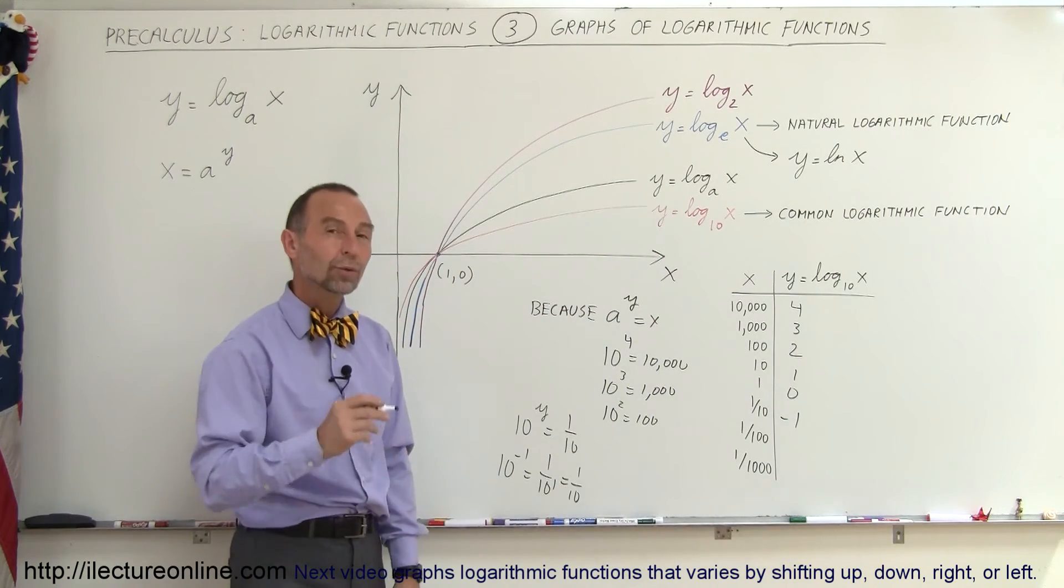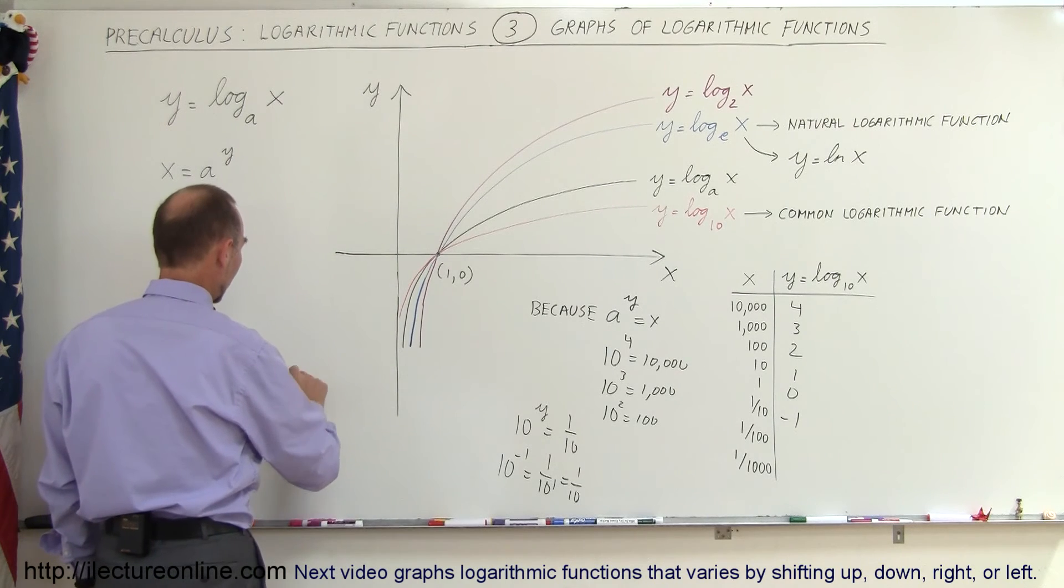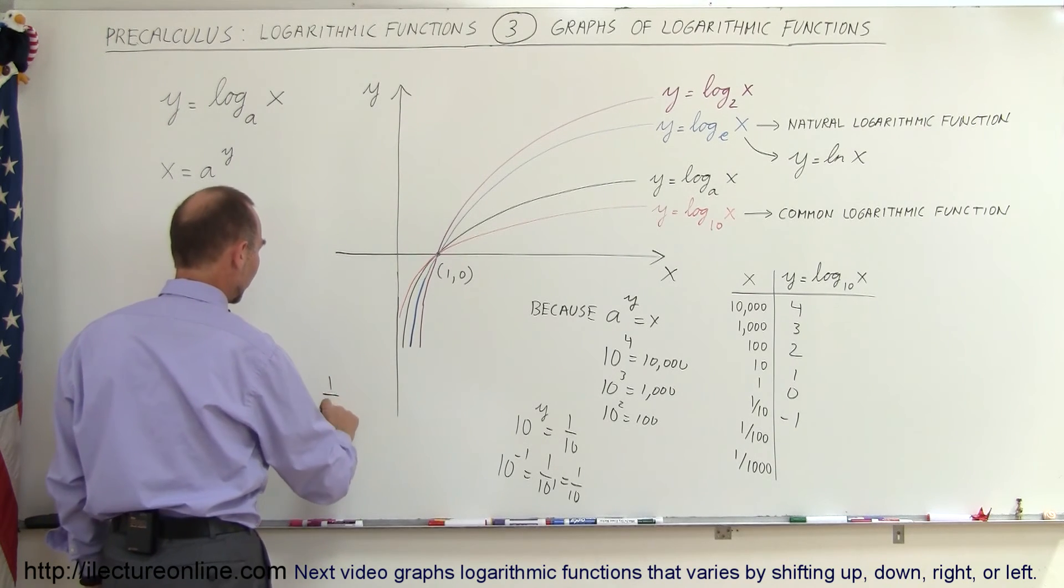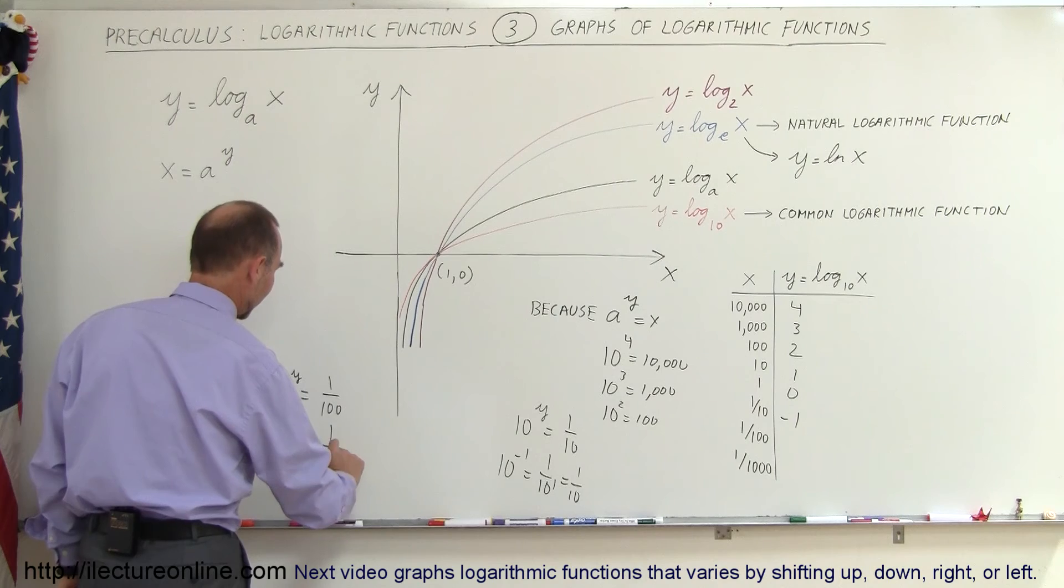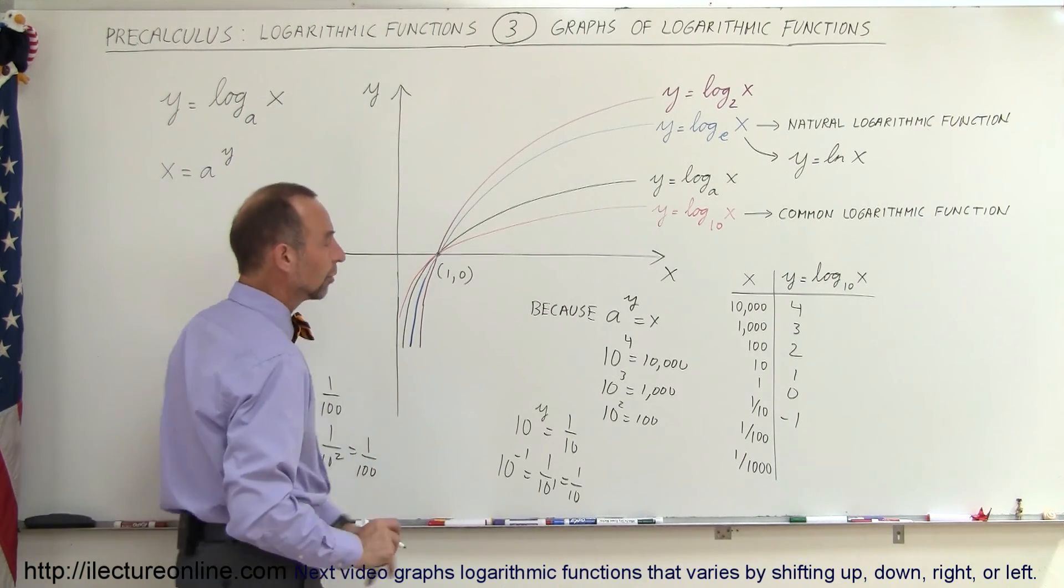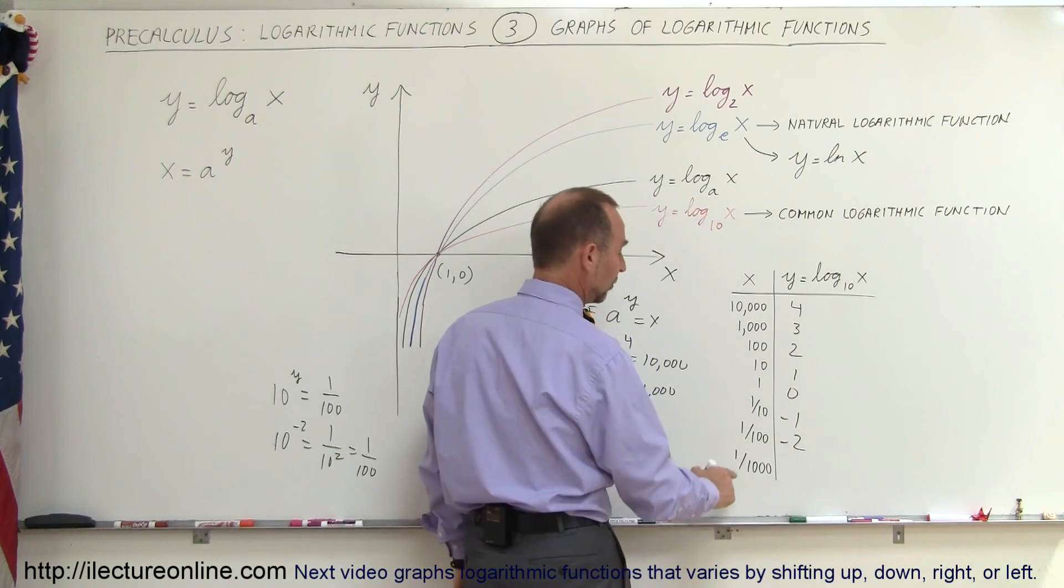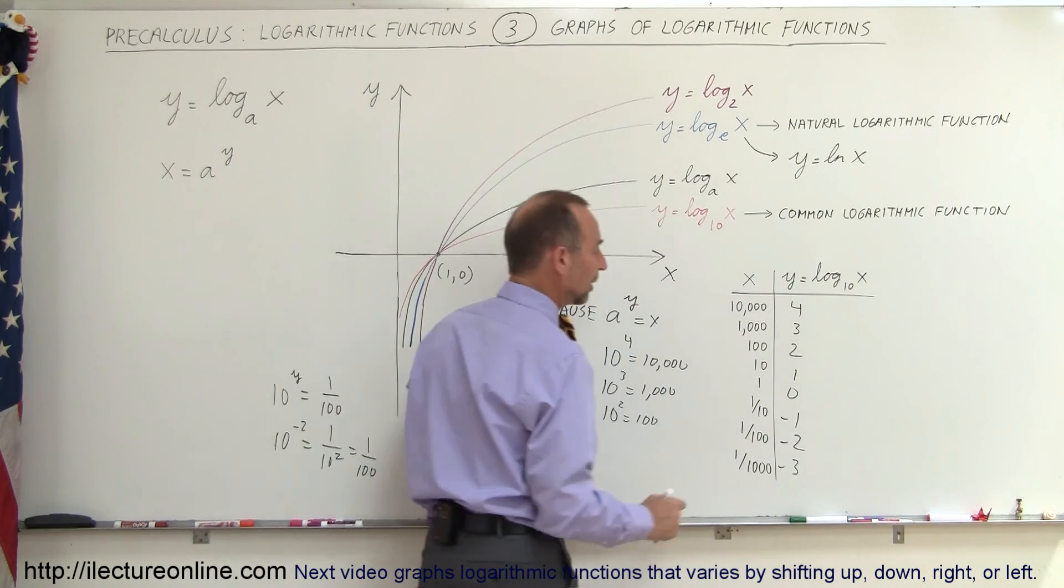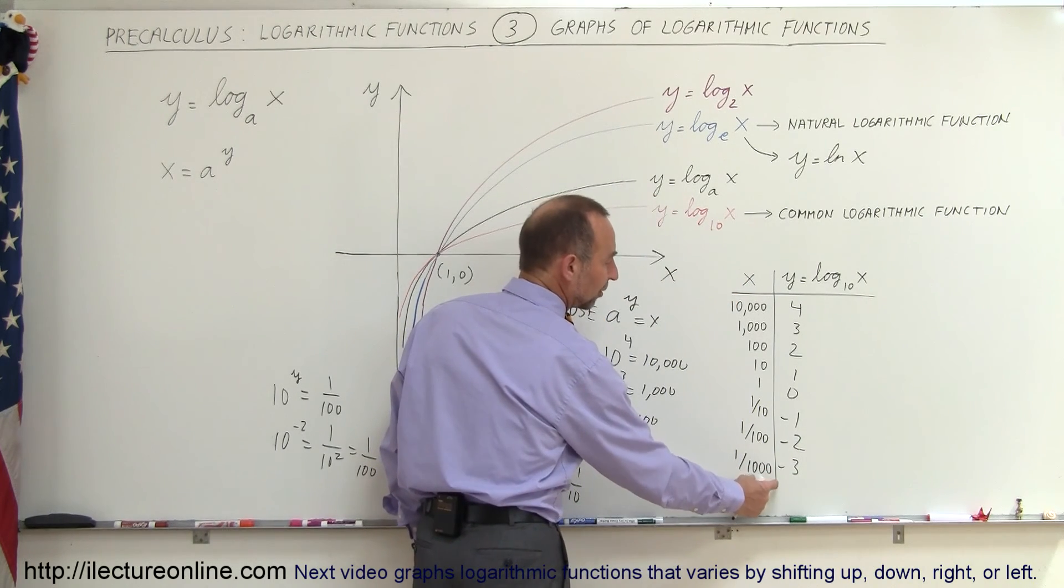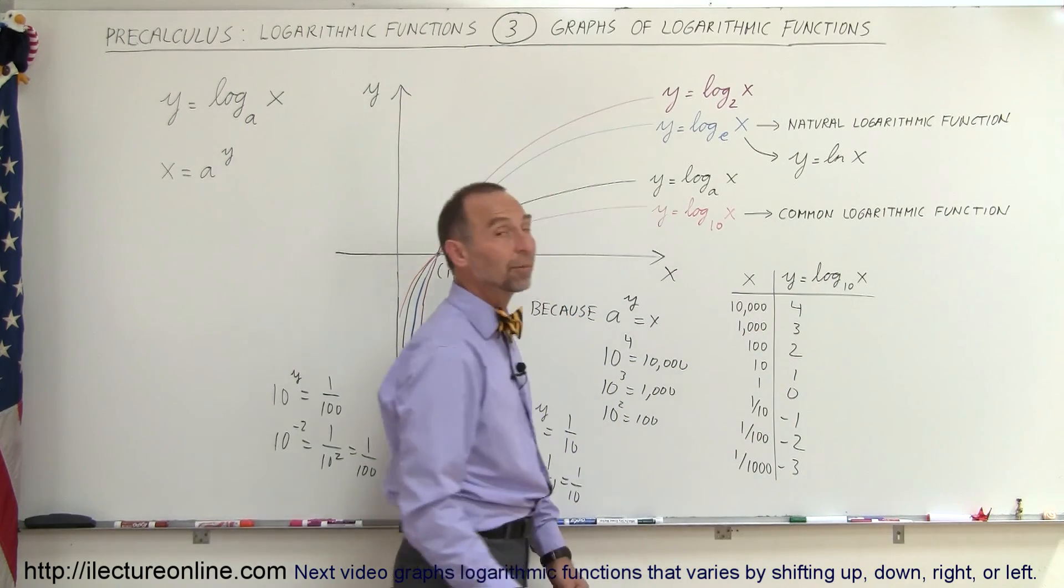What about when x is equal to 1/100? Well, again, you could say 10 to the y power is equal to 1 over 100. In other words, 10 to the negative 2 power is equal to 1 over 10 to the second power is equal to 1 over 100. In other words, when x is equal to 1 over 100, y can be negative 2, or y is equal to negative 2. And when x is equal to 1 over 1,000, y is equal to negative 3. So, when the number with the zeros is in the denominator, y is a negative number. When it's like this, y is a positive number.